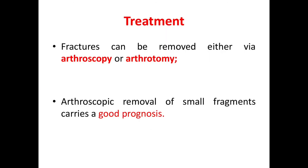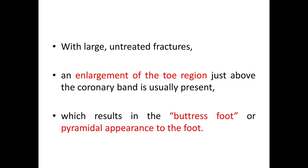Coming to the treatment, fractures can be removed either via arthroscopy or arthrotomy. The fractured fragments should be removed to avoid secondary arthritis, and arthroscopic removal of small fragments carries a good prognosis. With large untreated fractures, an enlargement of the toe region just above the coronary band is usually present, resulting in the buttress foot appearance.